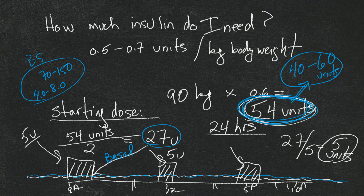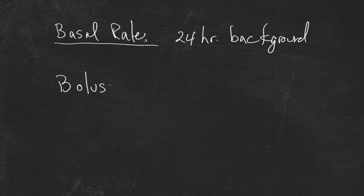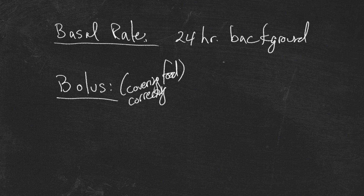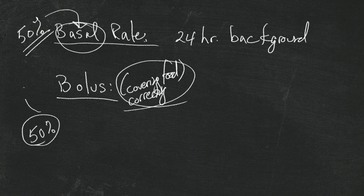That should take out some of the mystery as to why and how doctors and nurses figure out how much insulin to start with. We need a basal rate of insulin — meaning a 24-hour background amount — and we need something for boluses: a quick shot for covering food or correcting. 50% of your total daily dose is approximately assigned to the basal or background, and the other 50% you have to play with for boluses to cover food, make corrections, and that kind of stuff.